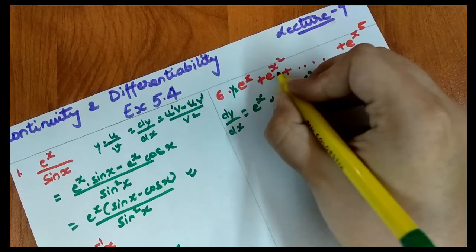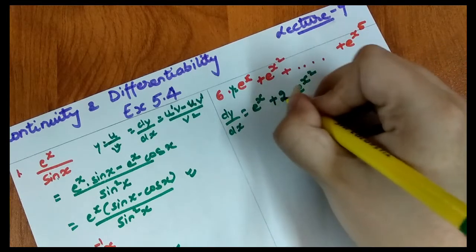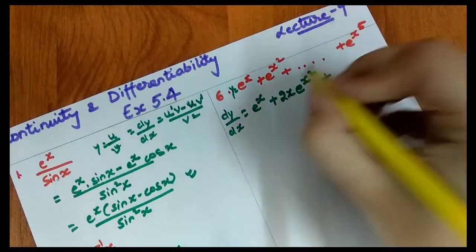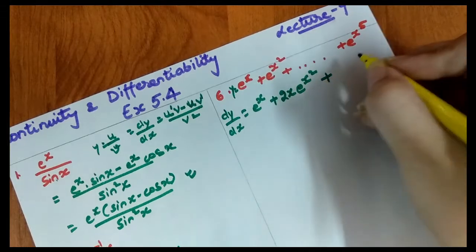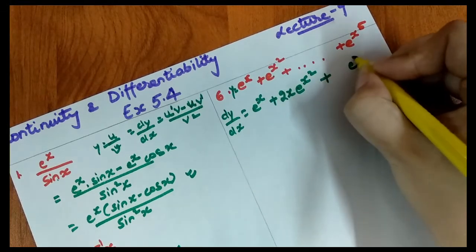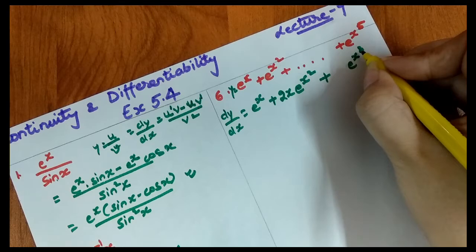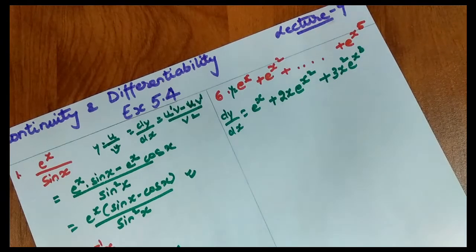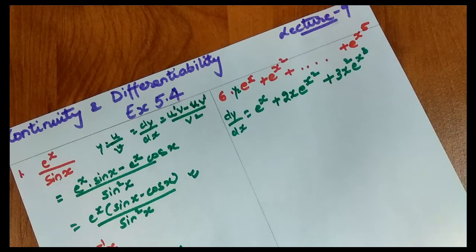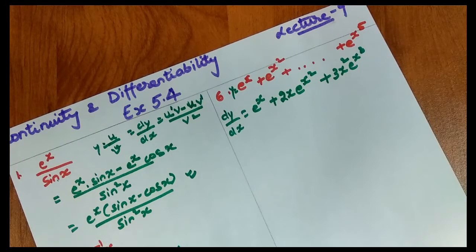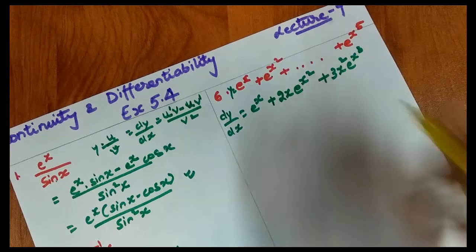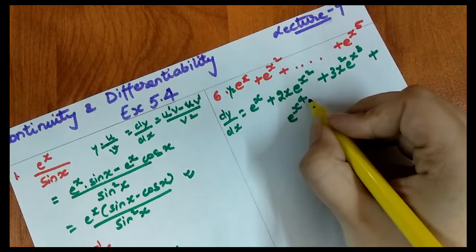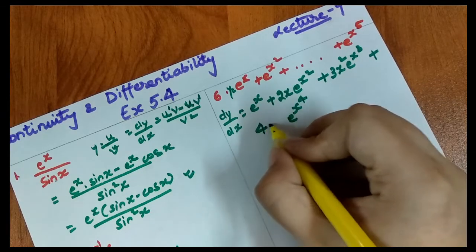Continuing the chain rule: differentiating cos gives −sin(e^x), and then differentiating e^x gives e^x. We apply the chain rule at each step — for example, x² differentiates to 2x, x³ to 3x², and x⁴ as it is differentiates to give 4x³.